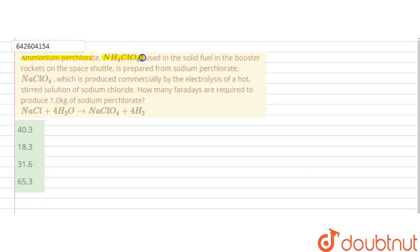Hello students, the question is: Ammonium perchlorate, NH4ClO4, used in the solid fuel in the booster rockets on the space shuttle, is prepared from sodium perchlorate, NaClO4, which is produced commercially by the electrolysis of a hot stirred solution of sodium chloride. How many Faraday's are required to produce one kg of sodium perchlorate?